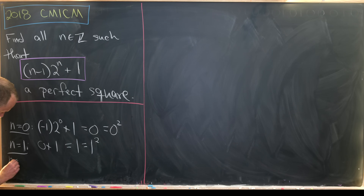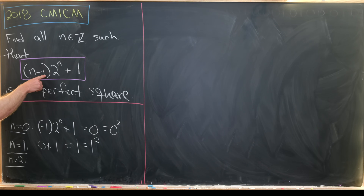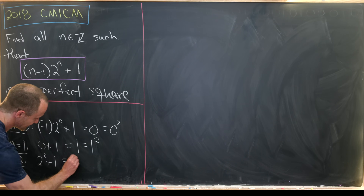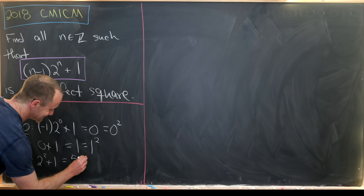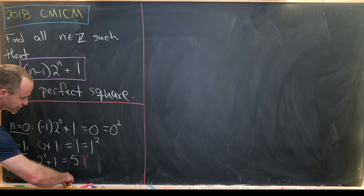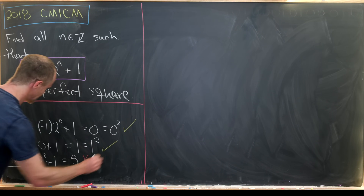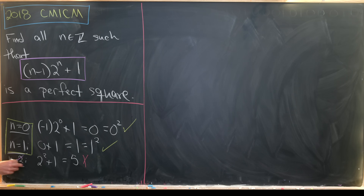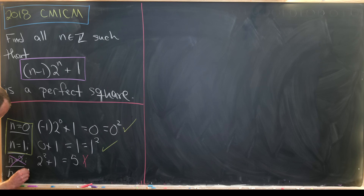Now let's look at n equals 2. We get 2 minus 1, which is 1, times 2 squared plus 1, so that's 5 — not a perfect square, so no solution there. I'll let you check n equals 3 on your own, but you will not get a solution in that case either.